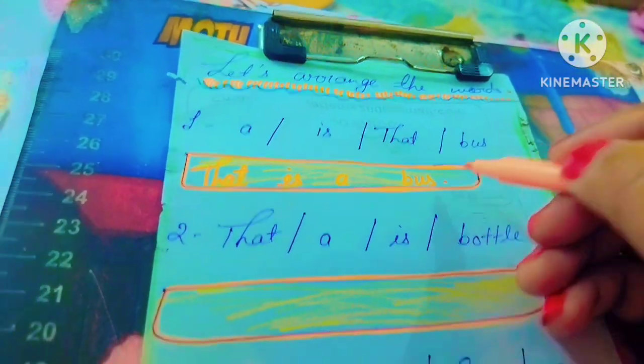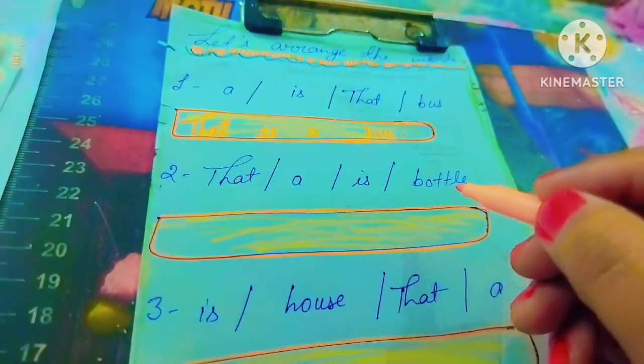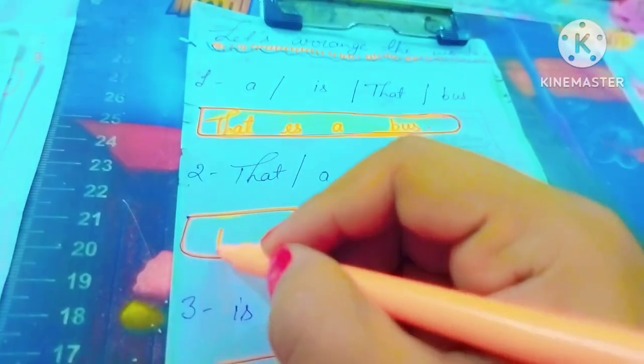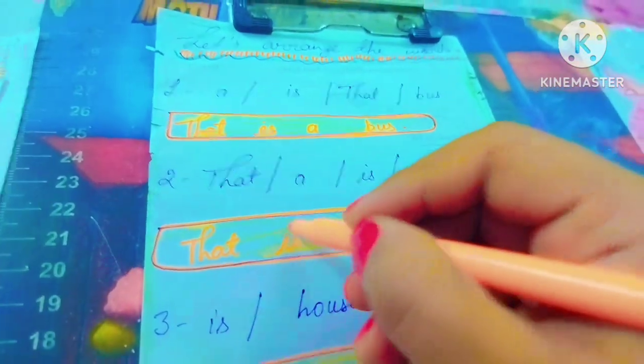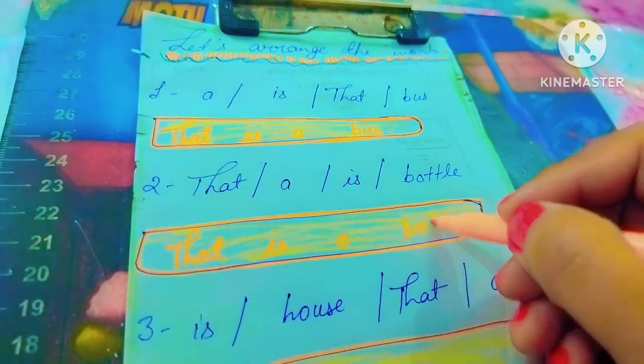See the next word, how do we arrange the words? First we write 'that is a bottle'.